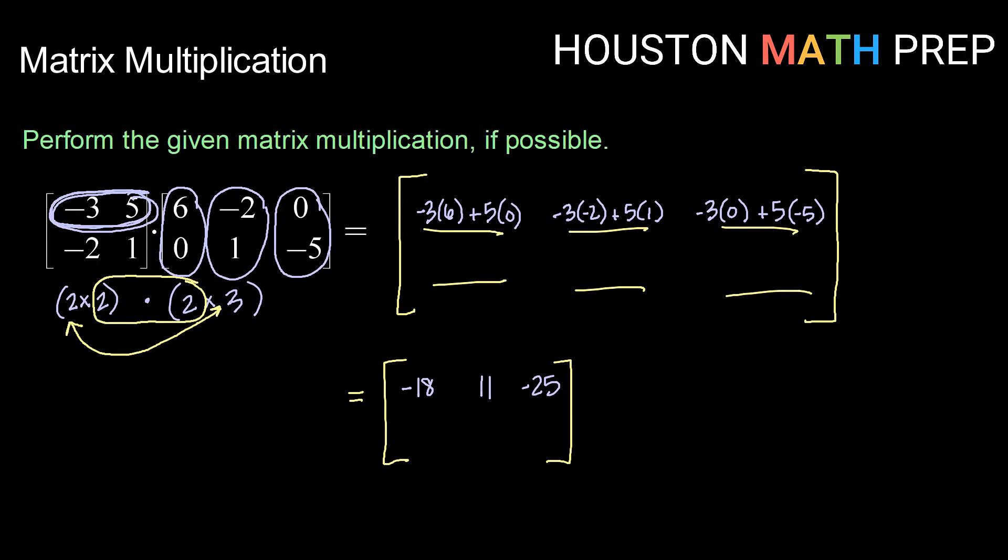Now that we have finished the entire first row, we're going to move on to the second row of the first matrix. So now we're going to repeat that process with each column, but now we're distributing the second row. So we have row 2 times column 1. That's going to be -2 times 6 plus 1 times 0, or -12 plus 0. So we have -12 here.